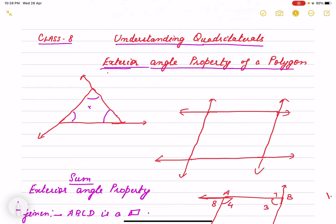And if these are the angles which are exterior angle, it is formed outside the polygon. So these angles are exterior angles.